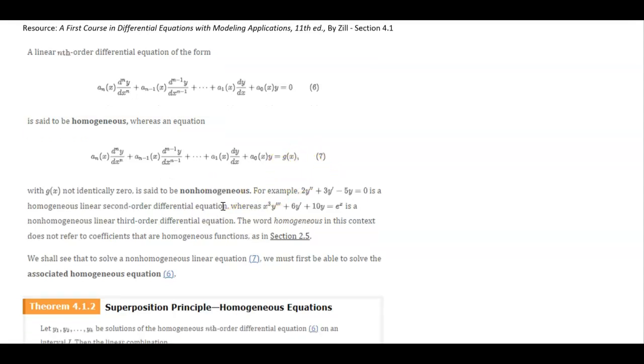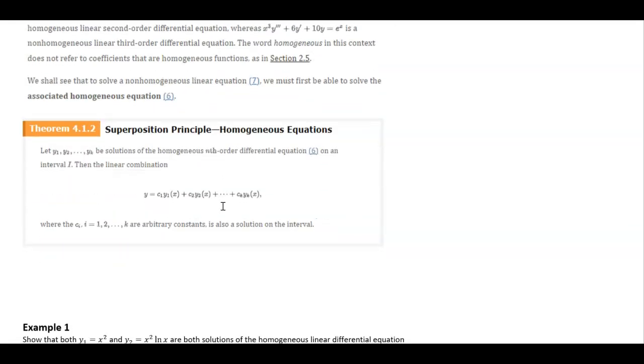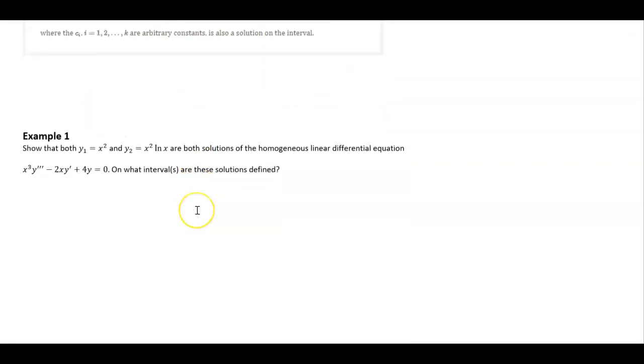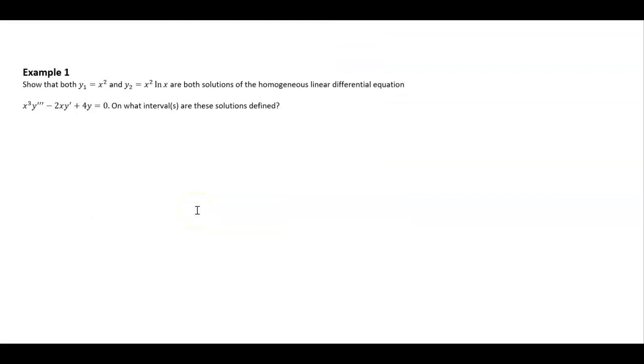Let's first look at the superposition principle for homogeneous equations. For any nth order differential equation, if you know that there is a set of y of x solutions, then it must also be true that some linear combination of those solutions is also a solution on that same interval. So look at this example here. I'm going to show that both x squared and x squared times natural log are solutions, and then on what intervals they are defined.